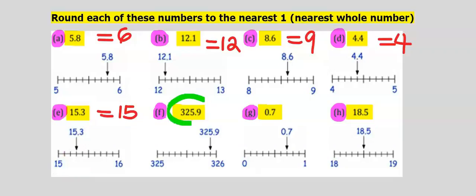Consider 325.9, which is a decimal between 325 and 326, which are whole numbers, halfway between them. 325.9 is closer to 326 than 325. Hence, our answer is 326.